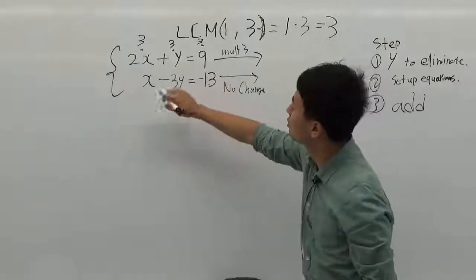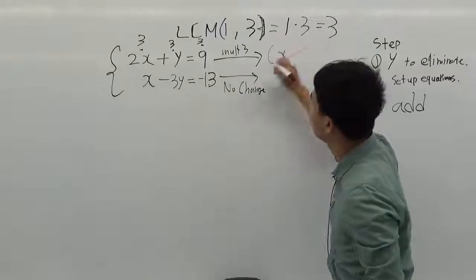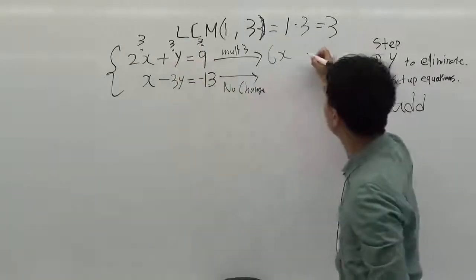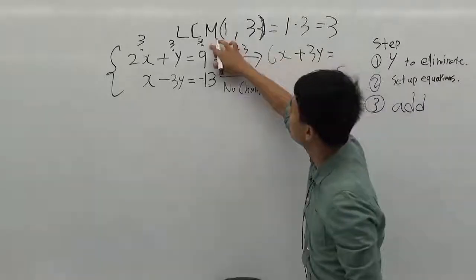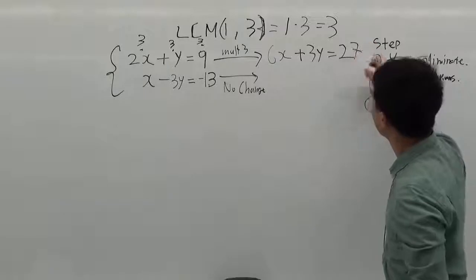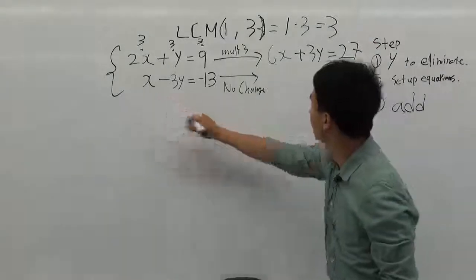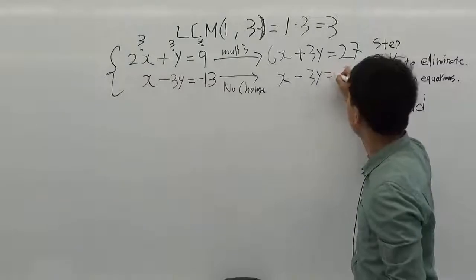The first one: 2 times 3 will be 6x, and 3 times 1 will be 3y, equals 3 times 9 is 27. Then, the second equation, we don't have to change it: x - 3y equals -13.